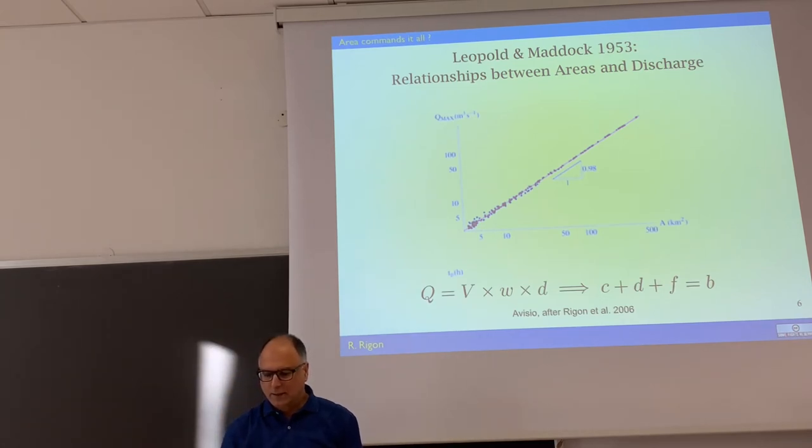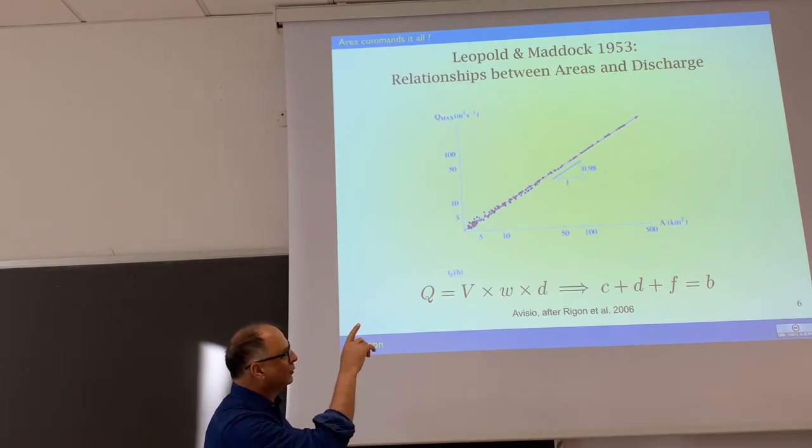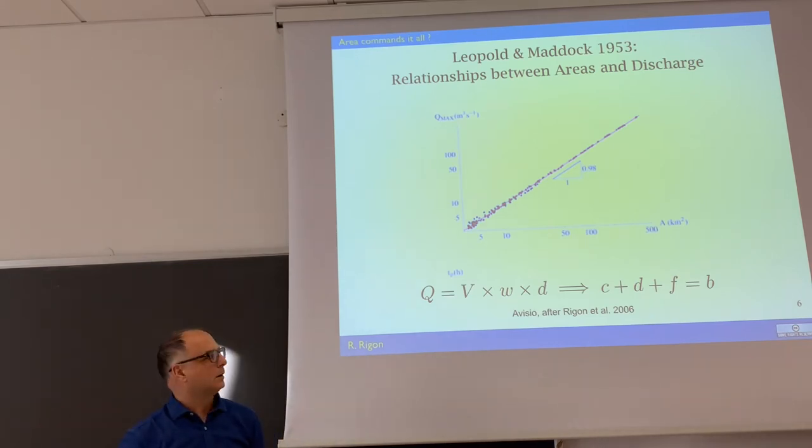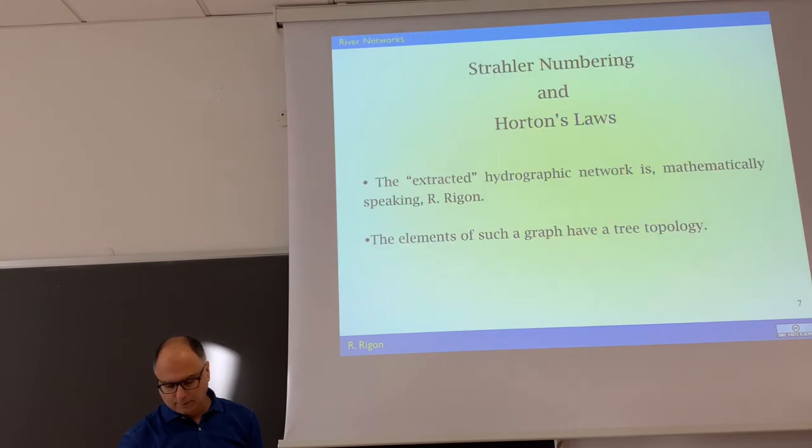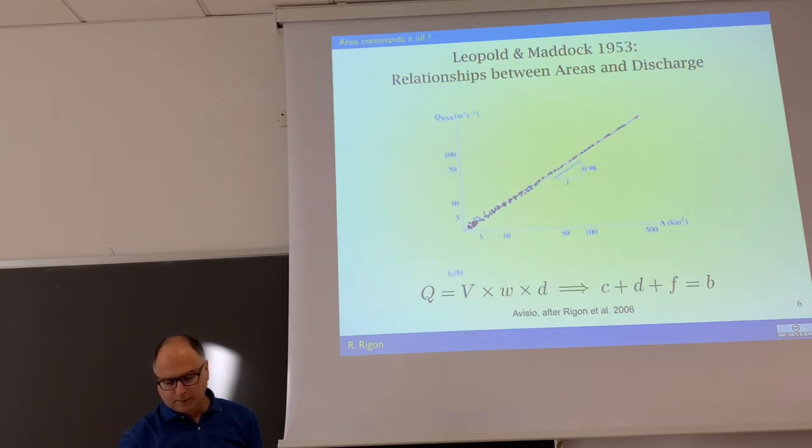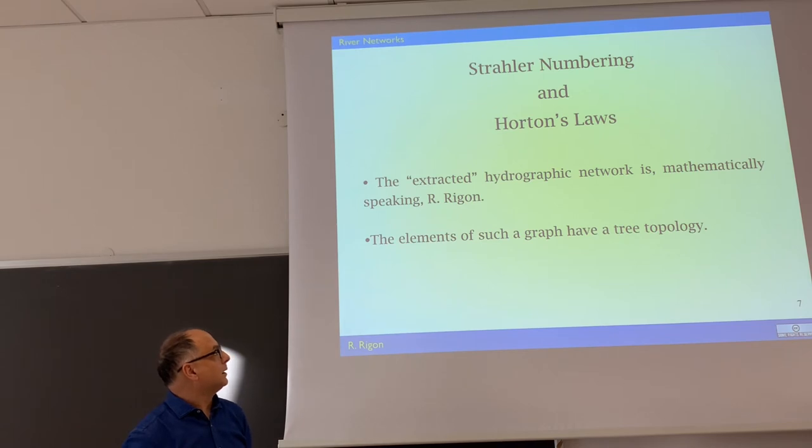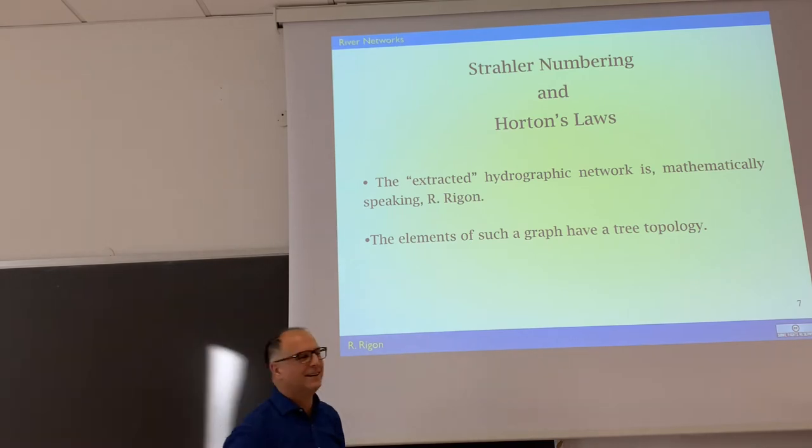This is another relation between discharge and areas that we analyzed here and you see the power is pretty well explained. So behind the previous law the idea is that when we know the topography we know something, not enough maybe but something, about what is going on in the river. The other thing is this: the network is speaking, mathematically speaking, a fractal. And mathematically speaking a tree.